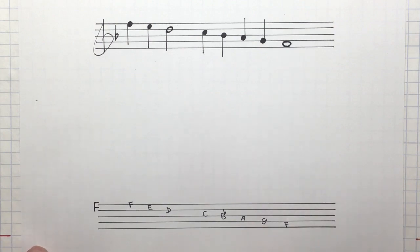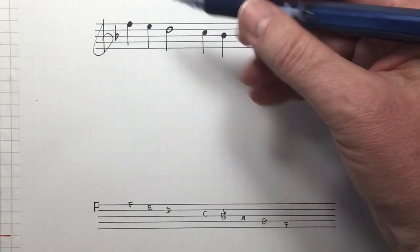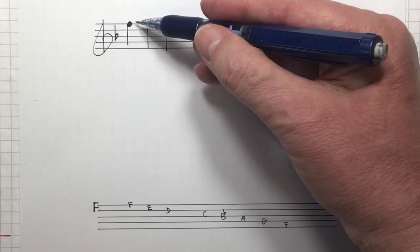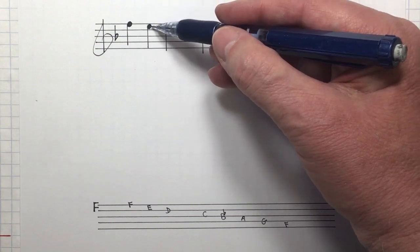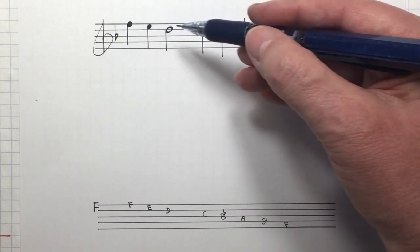Line space stave notation: the lines and the spaces between the lines convey pitch names.